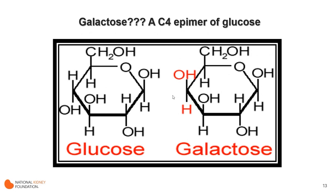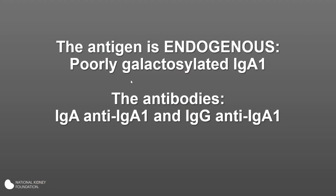You actually know galactose. On the left is glucose — a six-carbon molecule with hydrogens and hydroxyl ions hanging off the carbons — and on the right is galactose. The only difference between glucose and galactose is at the fourth carbon position, where the hydrogen and hydroxyl ions are flipped; they are mirror images, making galactose an epimer of glucose. That's why this is sometimes incorrectly described as underglycosylated — it's really undergalactosylated IgA1 that is the endogenous antigen.